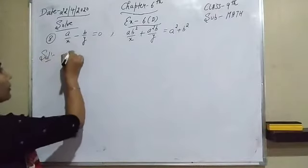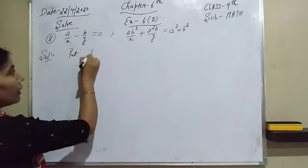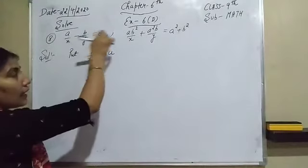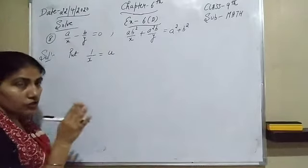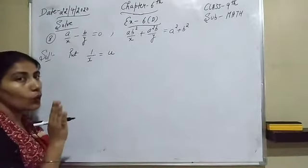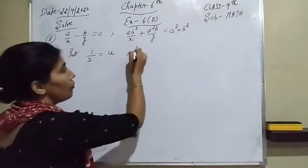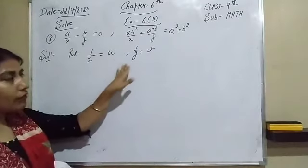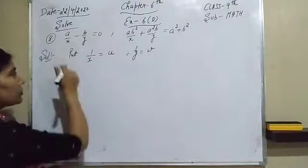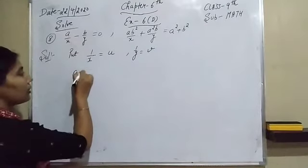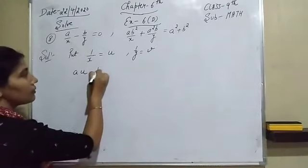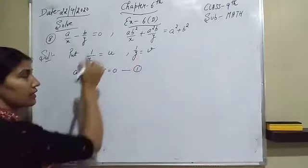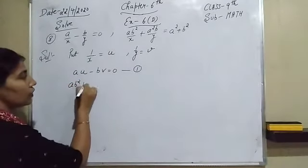Now let's start this question. We put 1/x equal to u (because a and b are already used), and 1/y equal to v. After this substitution, the first equation becomes: au minus bv equals zero. That is our first reduced equation.